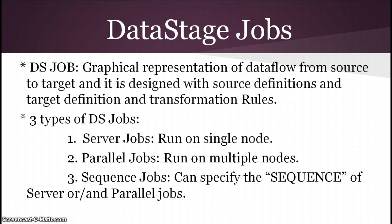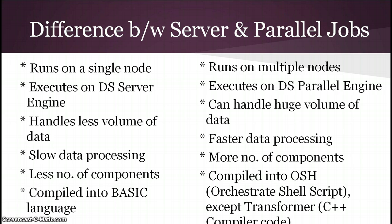A DataStage job is basically a graphical representation of data flow — from source to target, with transformation rules applied in between. This flow of data from source to target performing all the transformations is called a DS job. There are three types: server jobs, which run on a single node; parallel jobs, which run on multiple nodes and are used in most real-world projects; and sequence jobs, which allow you to trigger parallel and server jobs to run in sequence, one after another.